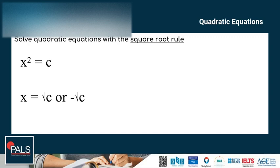The square root gives two solutions, because anytime a negative number is squared, it gives a positive result. For instance, if you know that a number squared is 4, there is no way to know if the original number was 2 or negative 2 — it could be either 2 or negative 2.